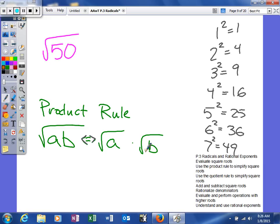Now, the product rule actually goes both ways. So if we had the square root of A times the square root of B, we could actually condense those into the square root of A times B. What we have is the square root of 50. Well, we said 50 is not a perfect square. So now what we do is we look for are there any factors of 50 that are perfect squares?